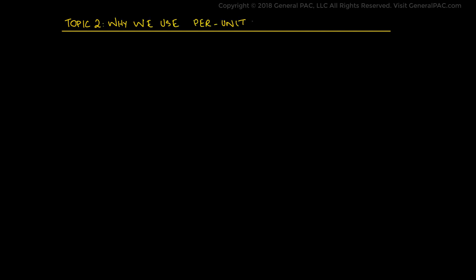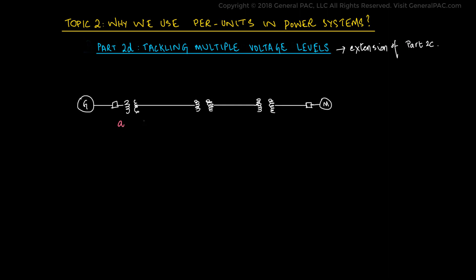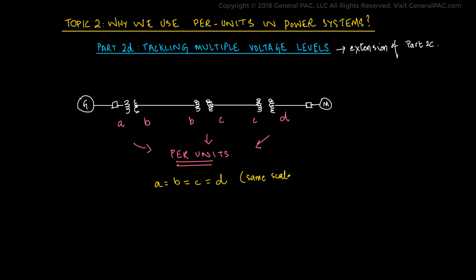Part 2d: why we use per units in power systems. In this video, we will demonstrate another advantage of using per unit systems in power system calculation. This aspect is an extension of the previous video. In a power system, multiple transformers result in multiple voltage levels at different points in the system. Per unit calculations ease this analysis by eliminating these voltage levels and bringing the impedances on both sides of the transformers onto a single scale. We demonstrated this in detail in Part 2c with a single transformer.